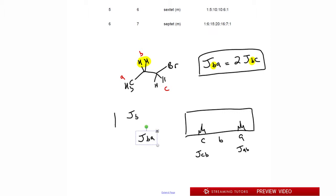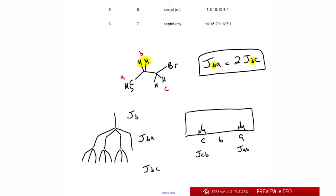We do the traditional n+1 for A's three H's: plus one gives four — a quartet. That breaks our single signal into four. Then each of those four signals is further split by JBC: C has two H's, so two plus one is three — a triplet. So every one of the four signals breaks into three, giving us 1, 2, 3 for each of the four — twelve total signals.